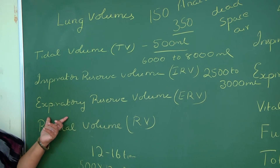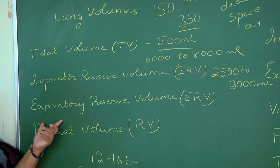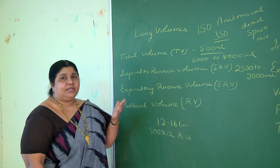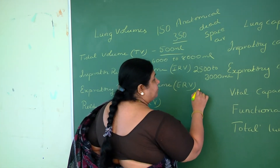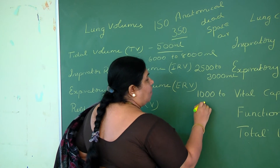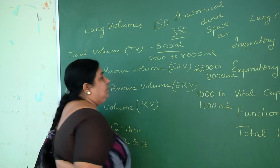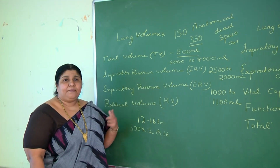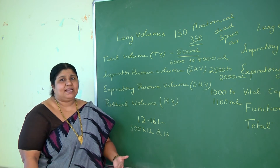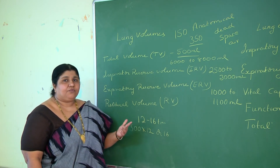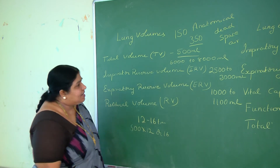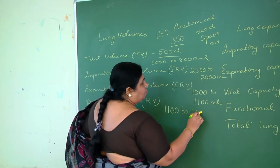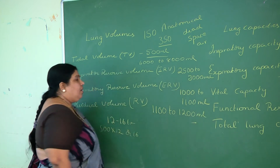Then what is expiratory reserve volume? The amount of air exhaled forcefully in addition to tidal volume is referred to as expiratory reserve volume. The volume is 1,200 ml. Then what about residual volume? The amount of air remaining in the lungs even after forceful exhalation is referred to as residual volume. The residual volume is 1,200 ml.